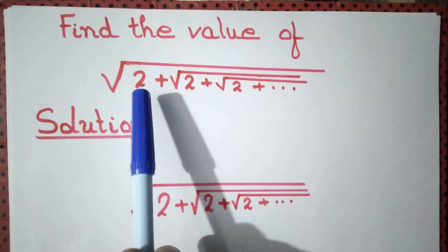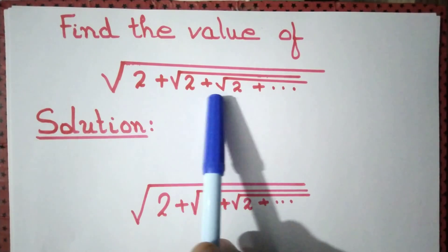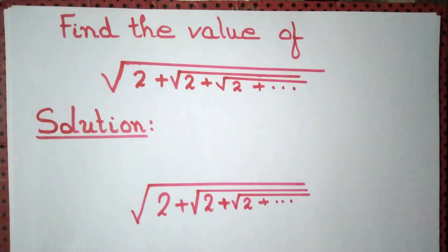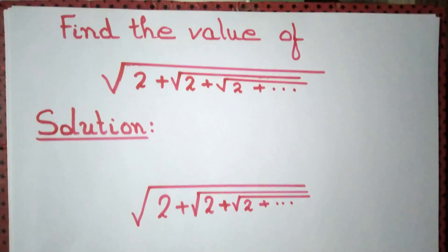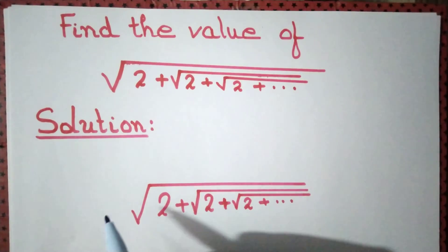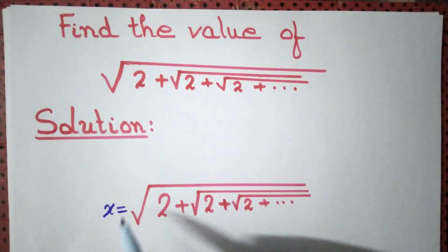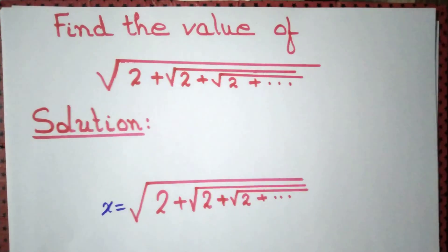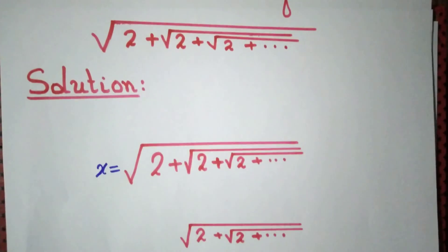Let us find the value of root of 2 plus root of 2 plus root of 2 plus dot dot dot. Since we do not know the value of this number, let this be equal to x. So x equals root of 2 plus root of 2 plus dot dot dot.